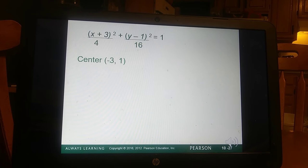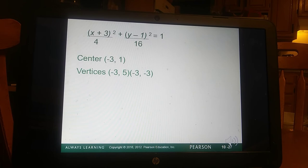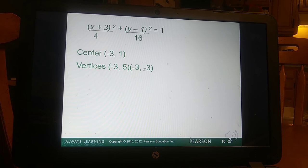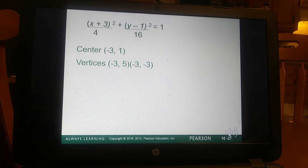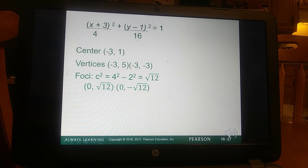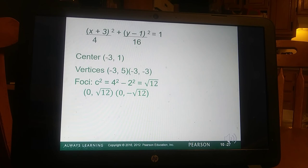So moving on, we have a center of negative 3, positive 1. We have vertices. The x is going to hold steady, and the y is going to add that a value. So your a value is square root of 16, or 4. So we're adding that to 1. So we add 4 to 1, it gives us 5. We subtract 4 from 1, it gives us negative 3. And we would do that same thing for the minor axis vertices. It's probably not on here, but I'll just say it. Your 1 would hold steady, and then this 3, we would add 2 because the square root of 4 is 2. So we would have negative 1, and we'd subtract 2, so we'd have negative 5 for those two values. But you'll see it on the graph as well.